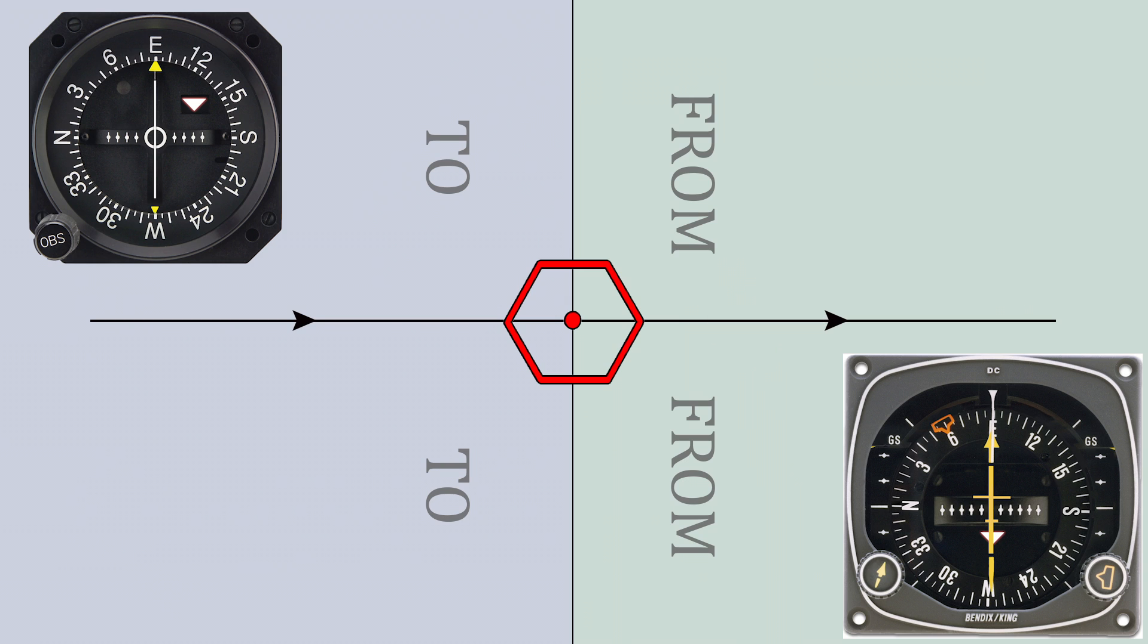So how can you tell when you are off course? The vertical needle of the indicator will always be centered when on proper course. If you deviate from it, the course indicated by the needle will also deviate from the center.